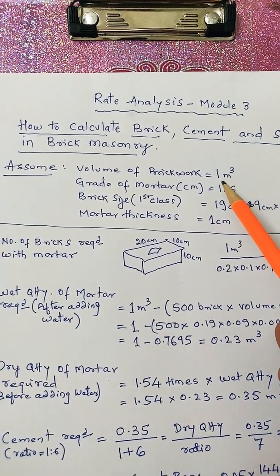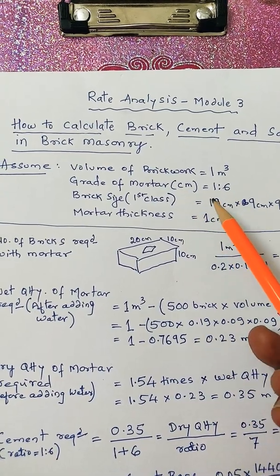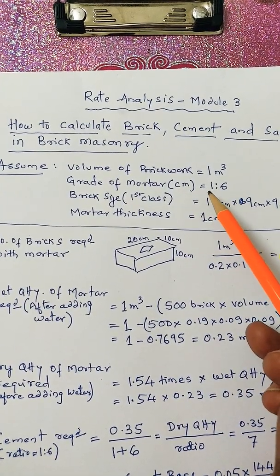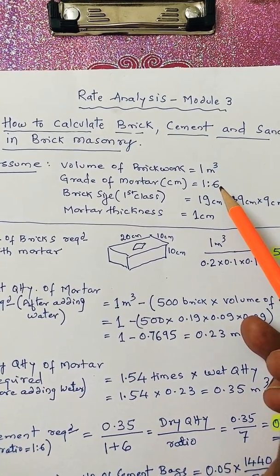All calculation will do in 1 meter cube. Then grade of cement mortar is 1 is to 6, that is 1 part of cement is to 6 part of fine aggregate that is sand.